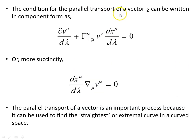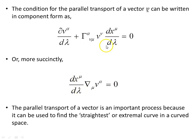The condition for the parallel transport of vector V can be written in component form as this equation, which is recognizable as the geodesic equation, as we'll see shortly. More succinctly, it involves the tangent vector components dx^mu/d_lambda times the covariant derivative terms. This is the condition for the parallel transport of a vector.